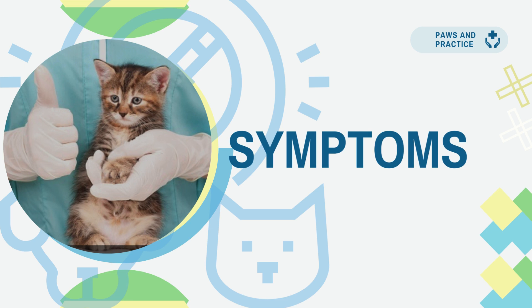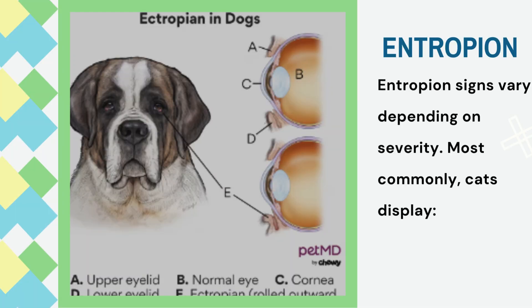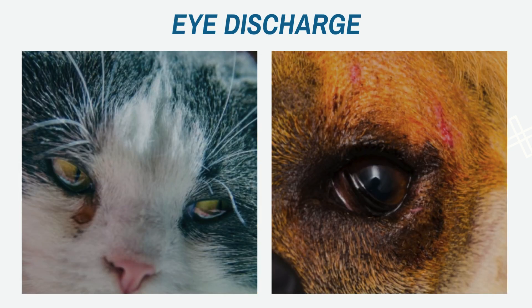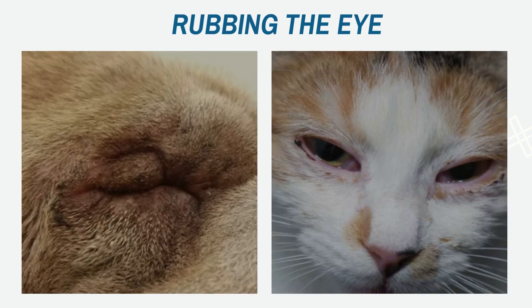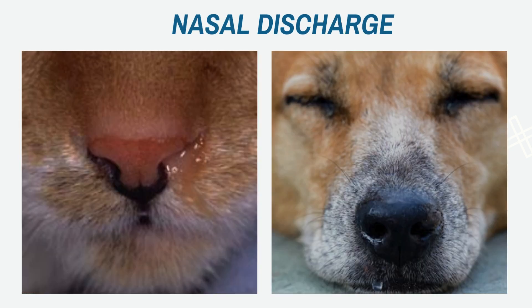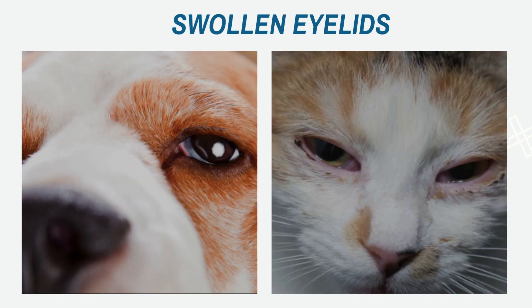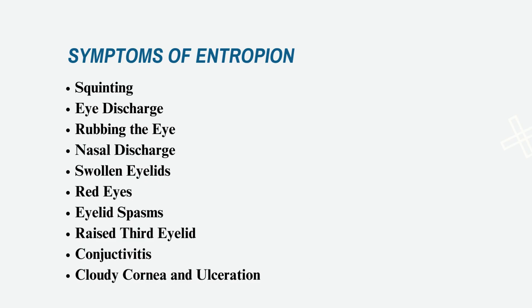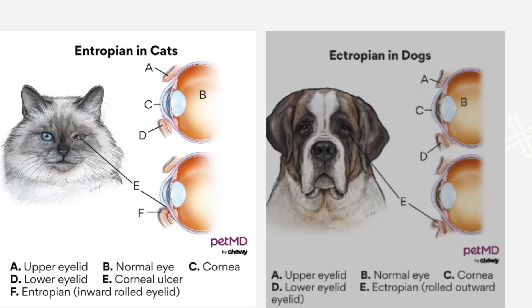Entropion signs vary depending on severity. Most commonly: squinting eye, discharge, rubbing the eye, nasal discharge, swollen eyelids, red eyes, eyelid spasms, raised third eyelid, conjunctivitis, cloudy cornea, and ulceration.